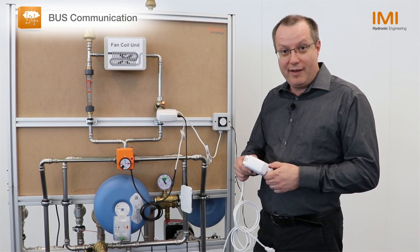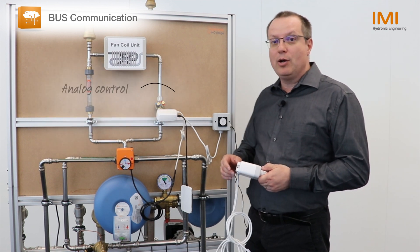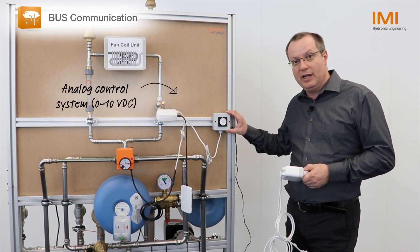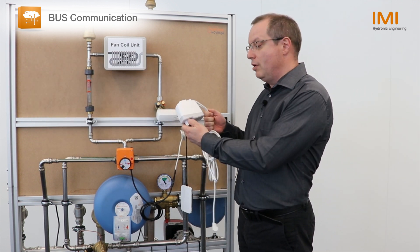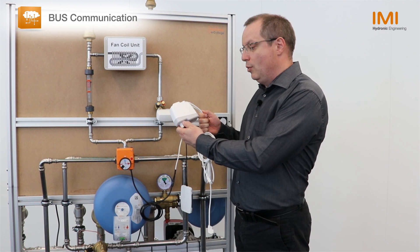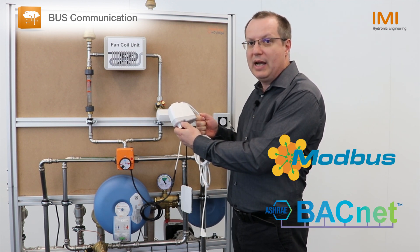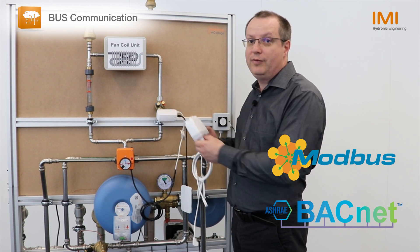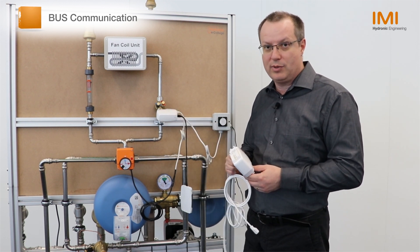All that I have shown you so far was based on an analog control system with a 0–10 volt input signal. There are variants of the changeover package also available with integrated Modbus RTU and BACnet MSTP communication. The configuration is as straightforward as just demonstrated.